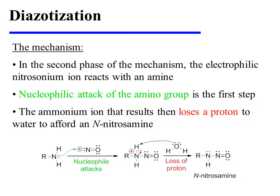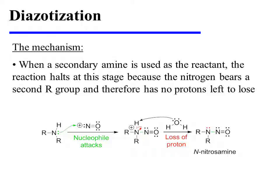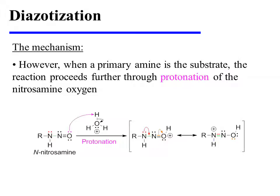In the second phase of the mechanism, the electrophilic nitrosonium ion reacts with an amine. Nucleophilic attack of the amino group is the first step. The ammonium ion that results then loses a proton to water to afford an N-nitrosamine. When a secondary amine is used as the reactant, the reaction halts at this stage because the nitrogen bears a second R-group and therefore has no protons left to lose.